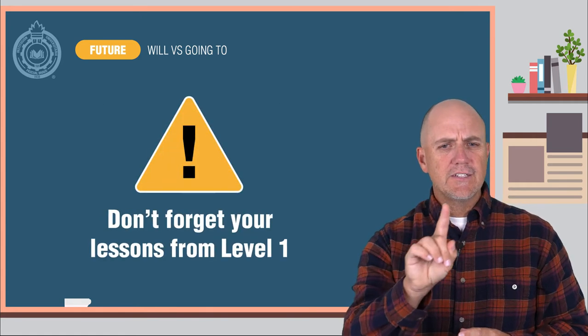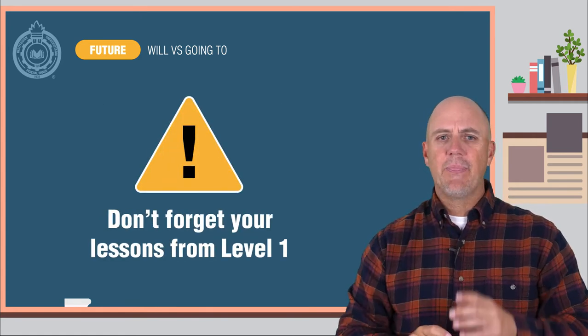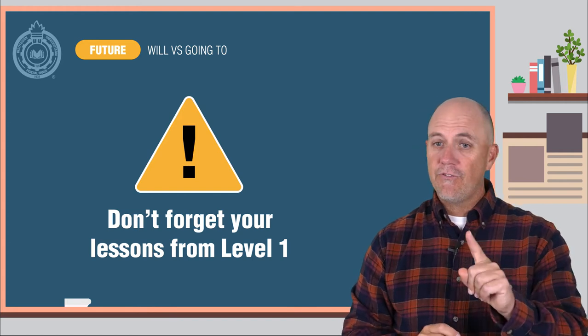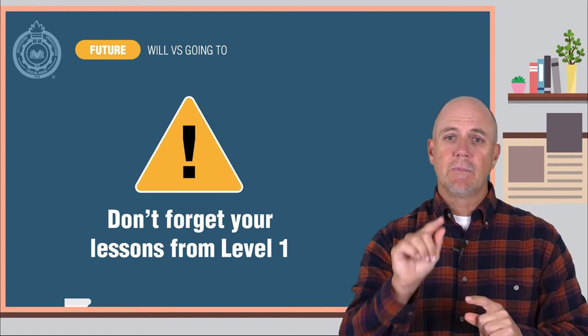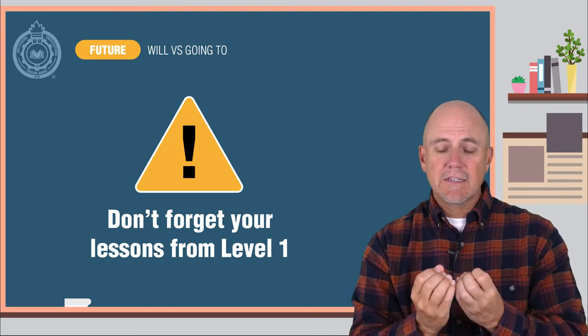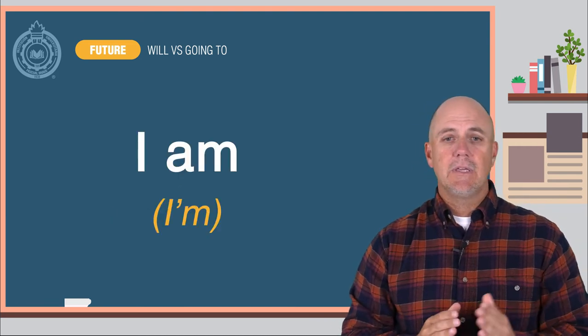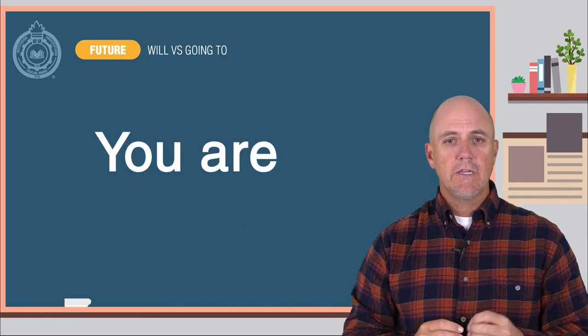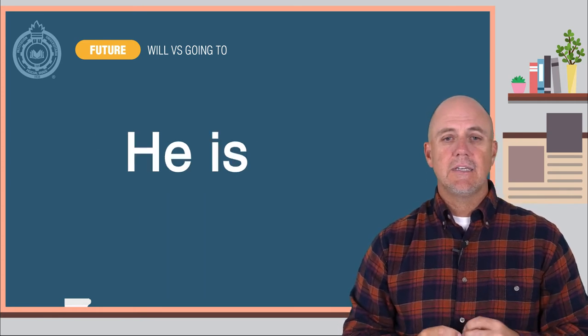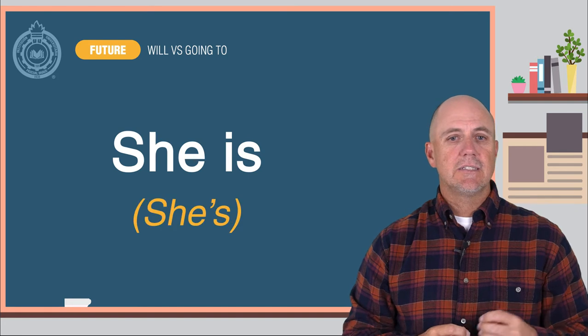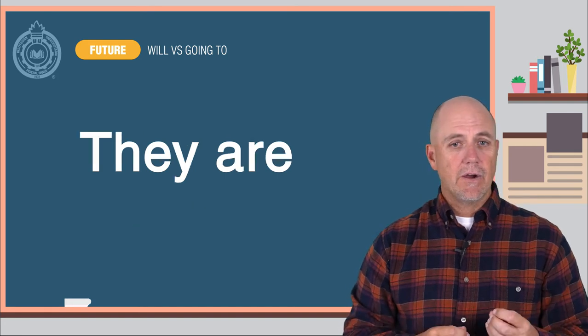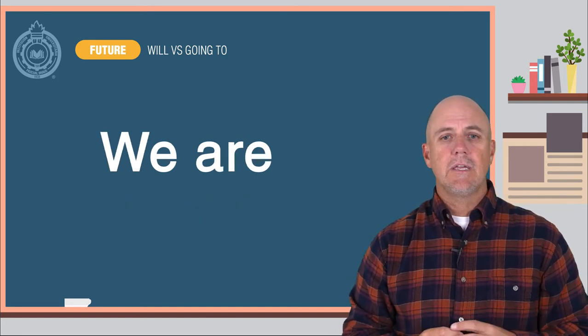Careful, don't forget your lessons from level one about the verb to be. Also, do not forget your lessons from level one about contracting the verb to be with the subject. I am equals I'm. You are equals you're. He is equals he's. She is equals she's. They are equals they're. And we are equals we're.